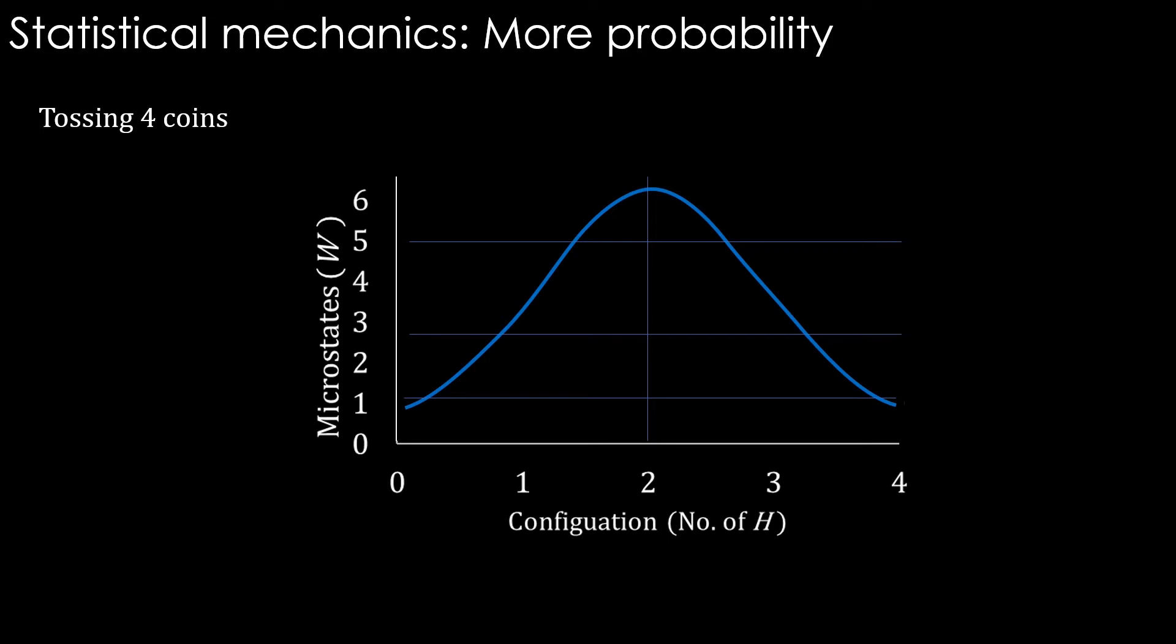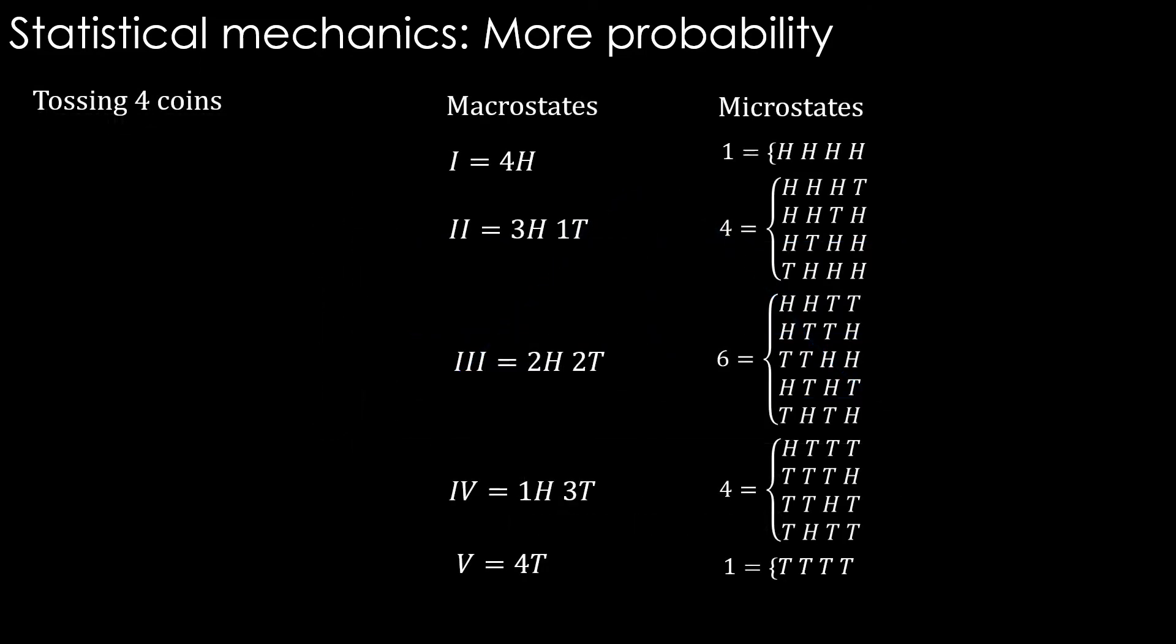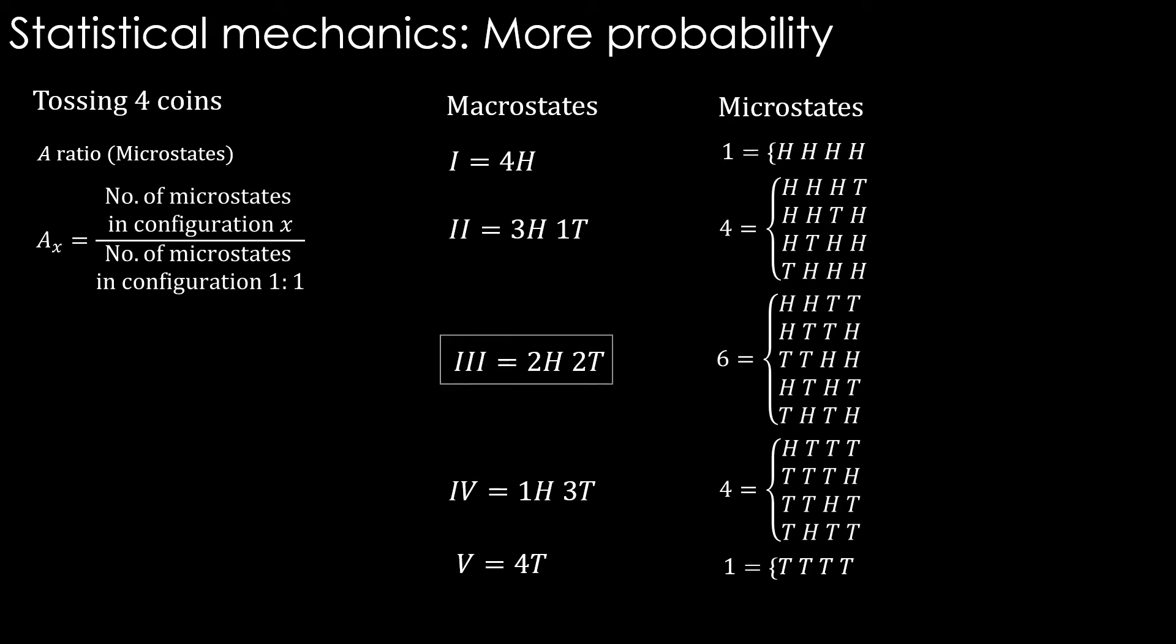Now, instead of these parameters, we will go for a slightly different axis which is useful to accommodate immense number of microstates and probabilities of macrostates directly. Now, these are the different macrostates and microstates. The A ratio is a way of representing microstates. It is number of microstates in configuration x divided by number of microstates in configuration 1 into 1, which is the middle configuration.